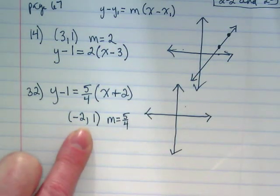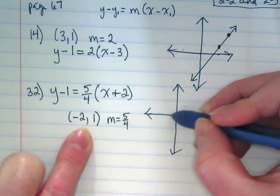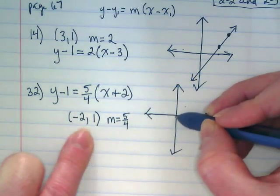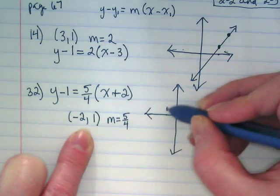I'm going to graph negative 2, positive 1 as my point. I start at the origin, I go which direction? For the ordered pair I have to start with x is negative 2, y is positive 1, there it is.